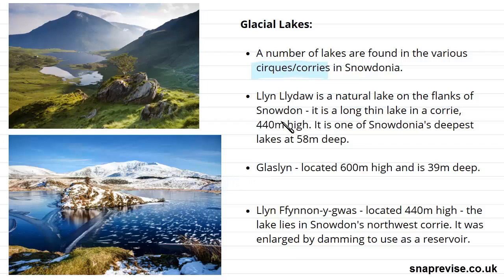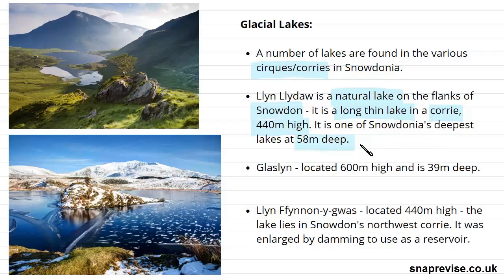Some of the most prominent lakes in the Snowdonia region include Llyn Llydaw, which is a natural lake on the flanks of Snowdon — the largest mountain in the Snowdonia region. This lake is a long, thin lake in a corrie, so it's a corrie lake, also called a tarn. Its altitude is at 440 metres high, and it's one of Snowdonia's deepest lakes at 58 metres deep. The glacial processes of glaciation have created these really substantial features in the landscape.